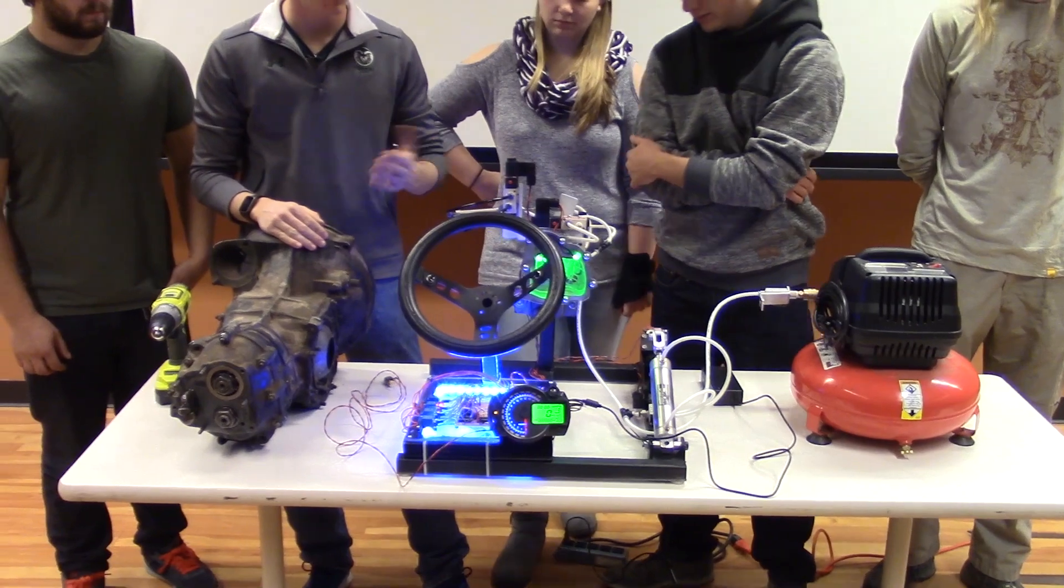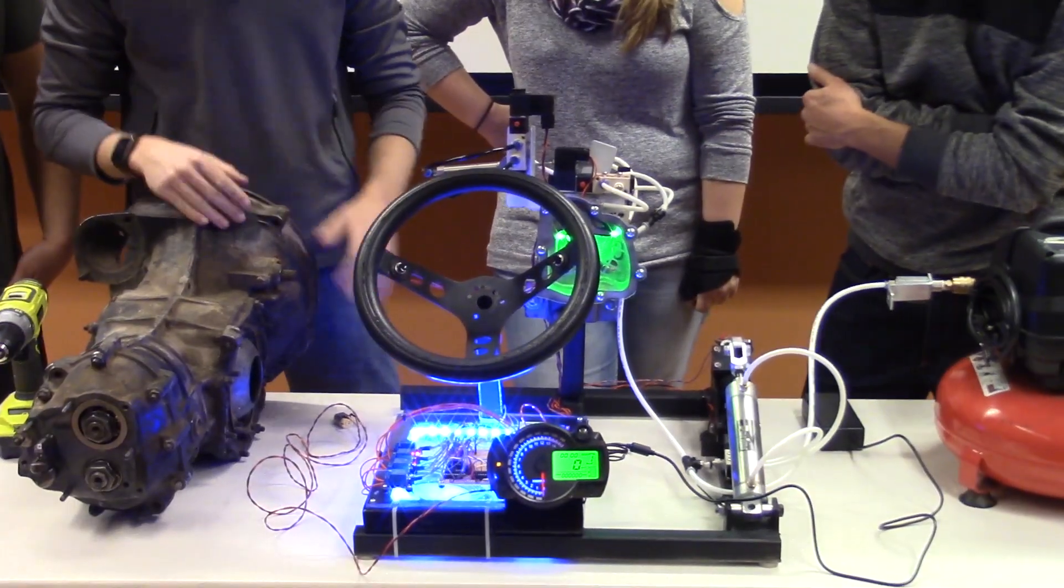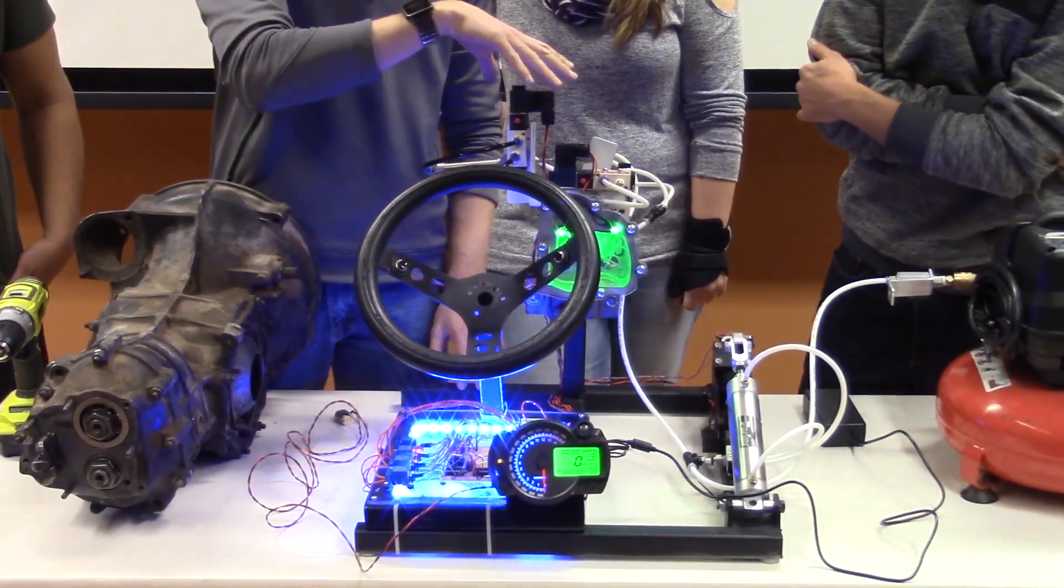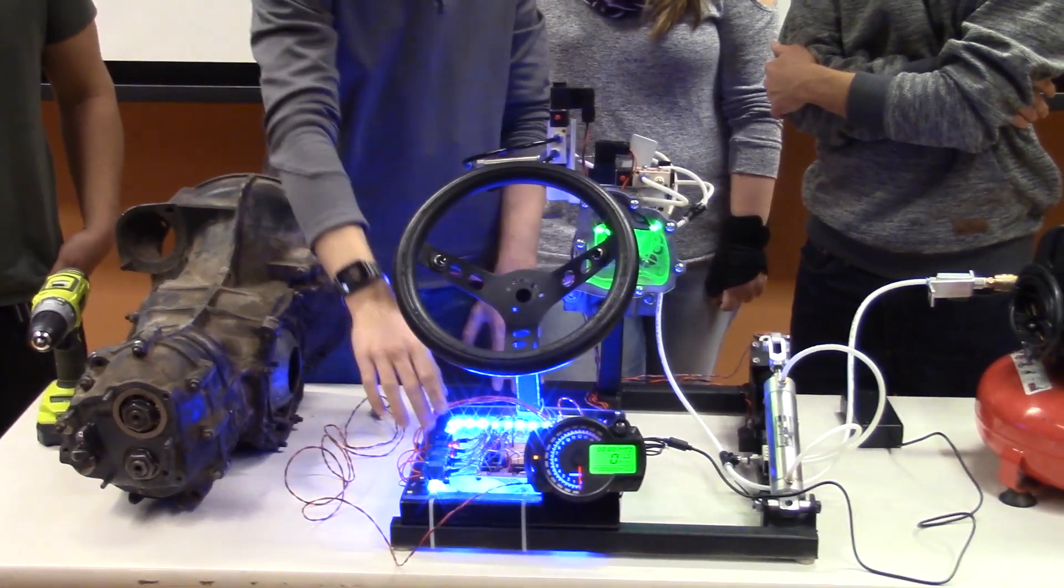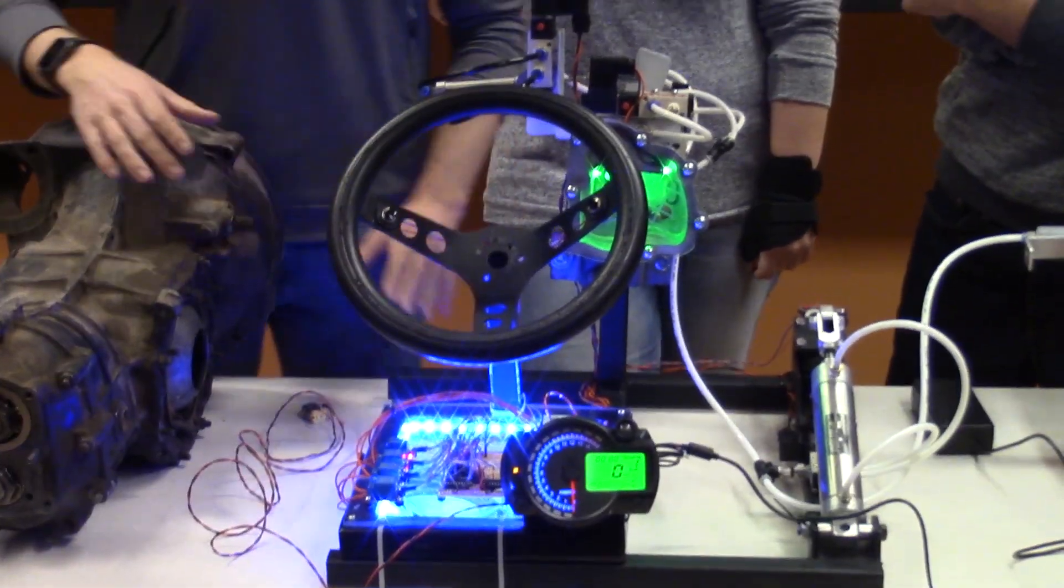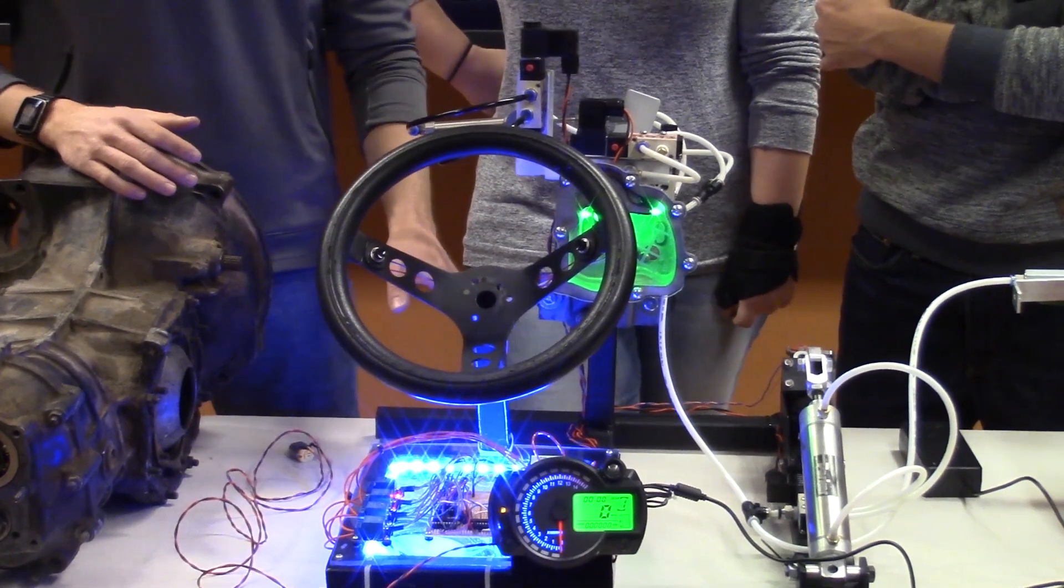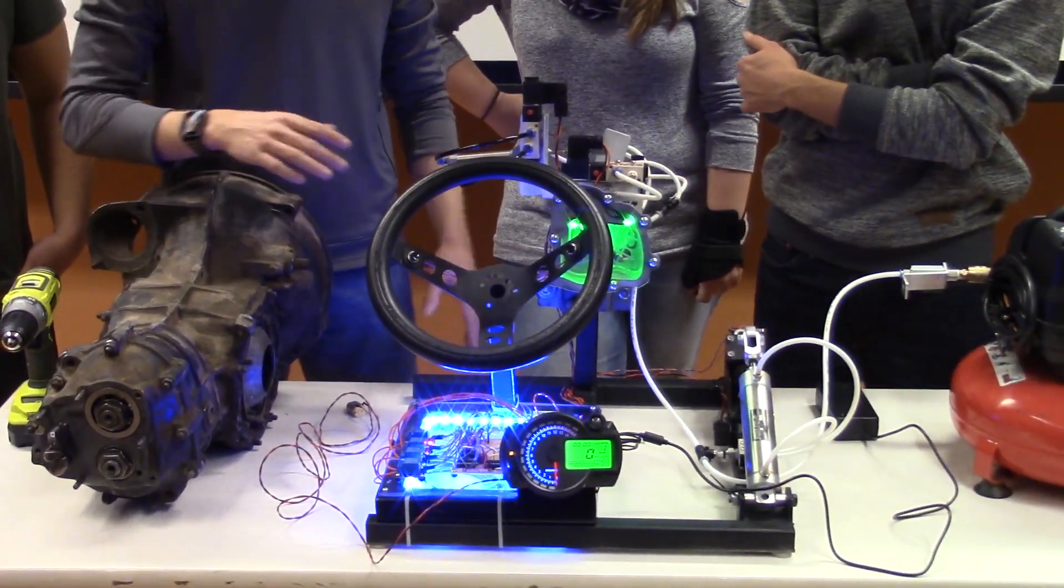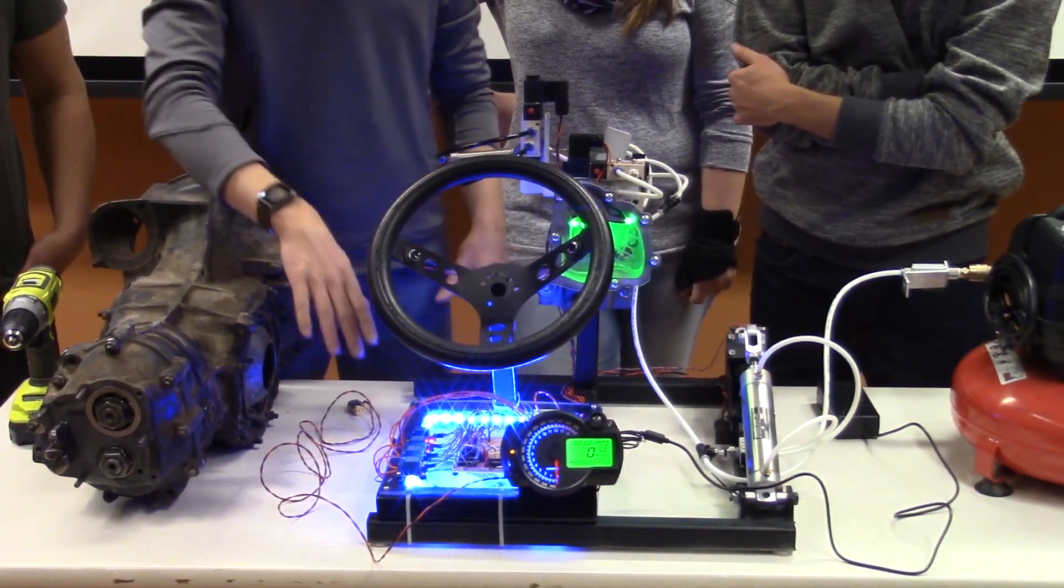So that means it's in first. We have four solenoids and they're controlled by four relays. Everything is run off PICs. We have three PICs - one is controlling the clutch, one is controlling the other four solenoids, and one is controlling the shift light.